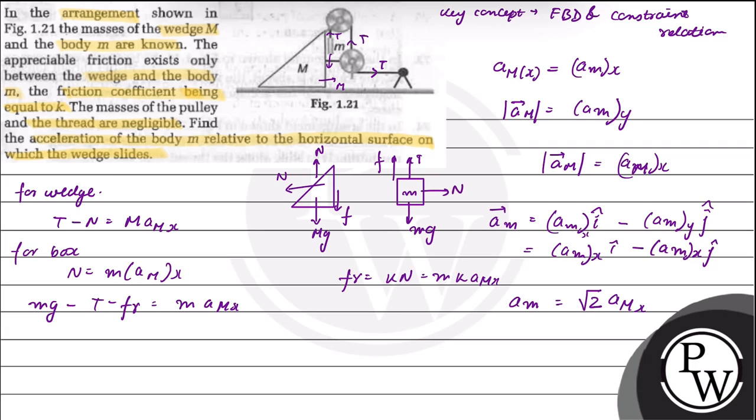From all these equations we can get to know that Mg minus small m A capital M_x minus M K A capital M in x direction is equal to small m plus capital M A capital M_x.